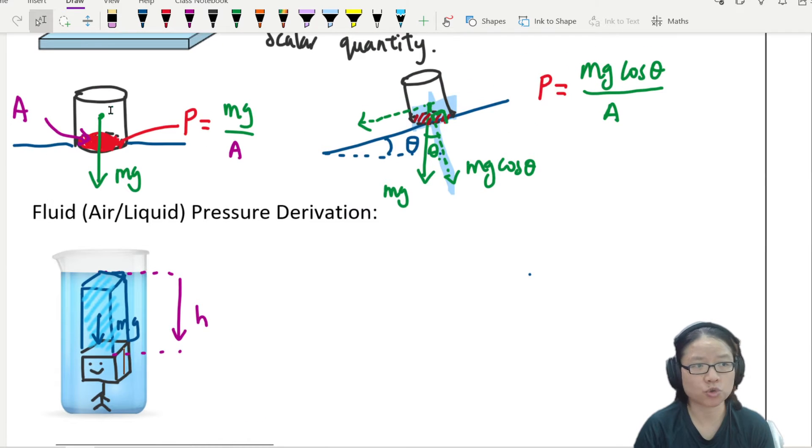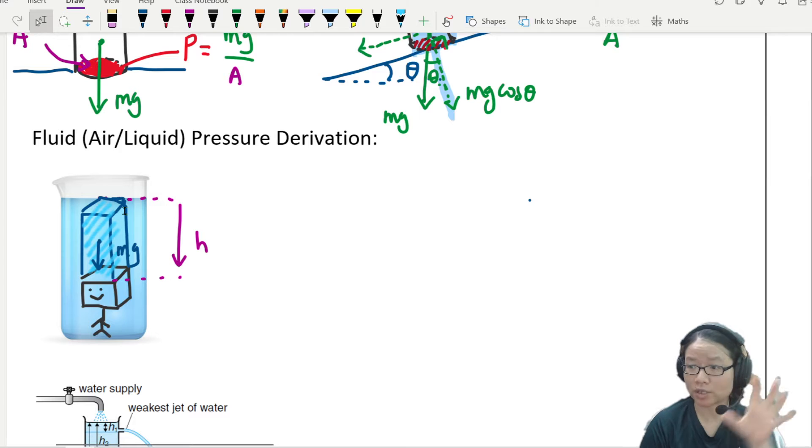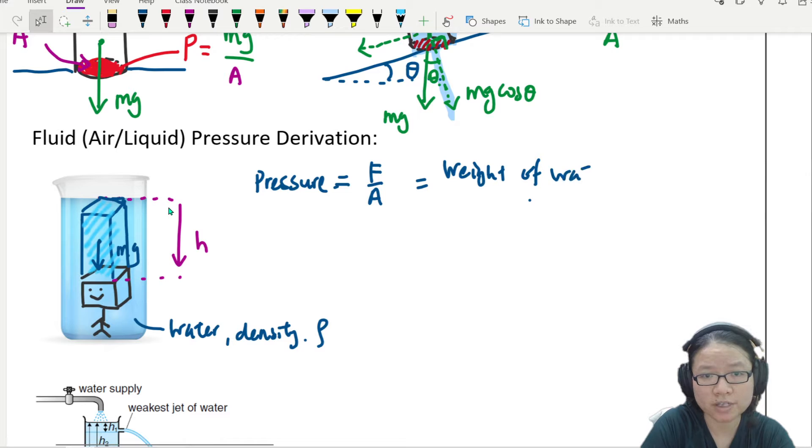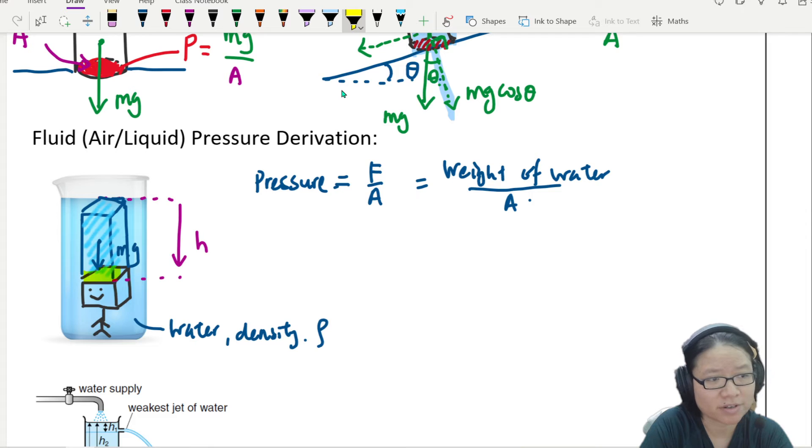So previously, right, what you did was you used the weight of a solid. But now you imagine that there's this entire water column pressing down on my friend's head. And you can now say that the pressure, but now this one is due to water. So pressure, let's assume this one here is water or any kind of liquid. The density is rho. So pressure here is due to F over A, but it's also due to the weight of water divided by the area A.